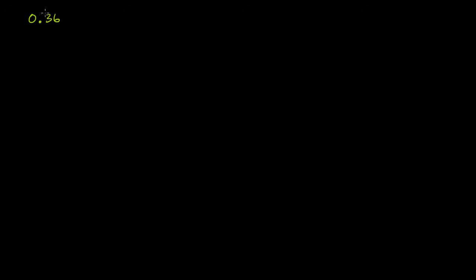So let's say I had 0.36 repeating, which is the same thing as 0. Since the bar is over the 3 and the 6, both of those repeat — 3, 6, 3, 6 — and it just keeps going on and on forever.